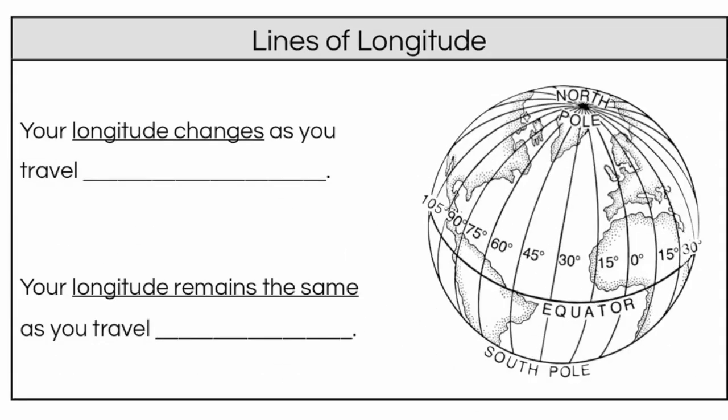Now, if we were to travel on the earth, as we move from one location to another, our longitude and our latitude will change, and it's important for us to be aware of how it will change. Let's start with our longitude lines. Remember, these are the lines that run from the north pole to the south pole, and they tell us how far east and west we are. So your longitude will change as long as you're traveling to the east or to the west.